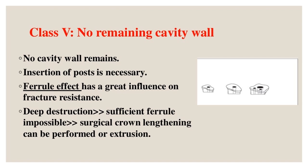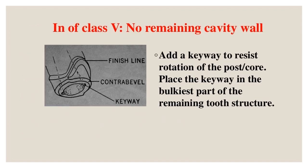Ferrule effect has a great influence on fracture resistance. In cases of deep destruction where sufficient ferrule is impossible, surgical crown lengthening or extrusion can be performed. A keyway should be added to resist rotation of the post/core, placed in the bulkiest part of the remaining tooth structure.